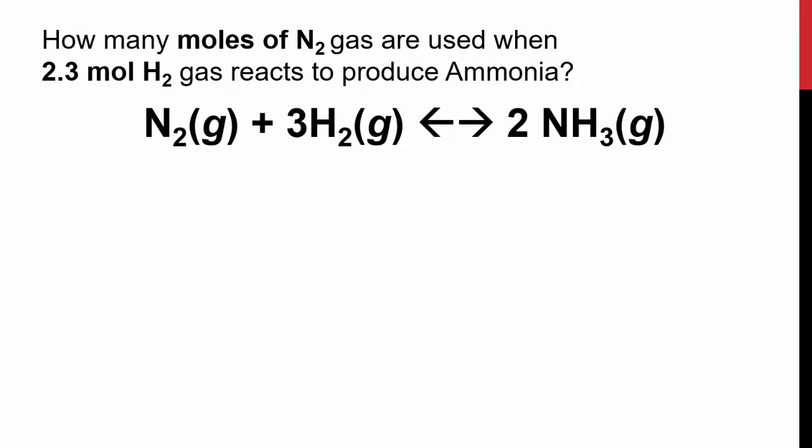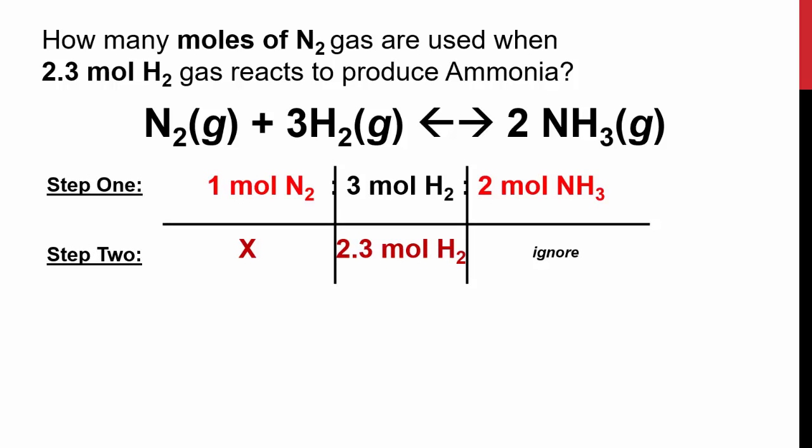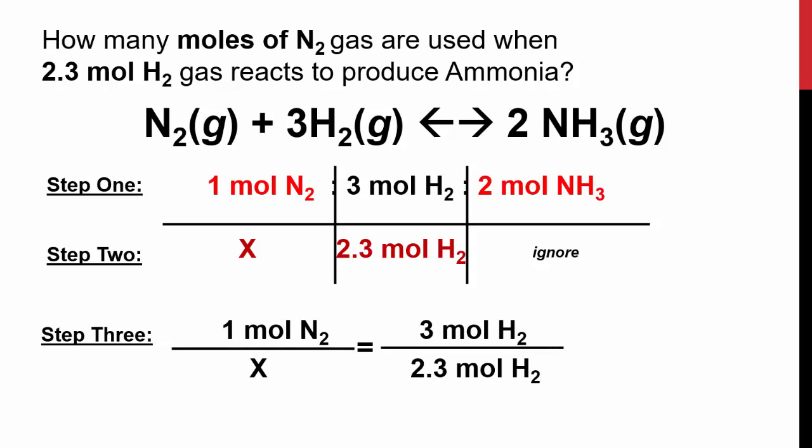In this problem, we're again looking for our reactants. We now have the same process as before, the Haber process. But, we are going to be looking for how many moles of nitrogen we are using when we only use 2.3 moles of hydrogen. Again, first step is to find our ratios, which is a 1 to 3 to 2. Second step is to look at the problem. We're looking for x, which is the moles of nitrogen. We are given 2.3 moles of hydrogen. So, this is a reaction between reactants and reactants, but we don't care how much ammonia we're producing right now. You're looking at your proportion, which is step 3, which is 1 mole of nitrogen over x is equal to 3 moles of hydrogen over 2.3.